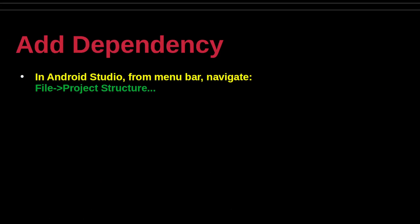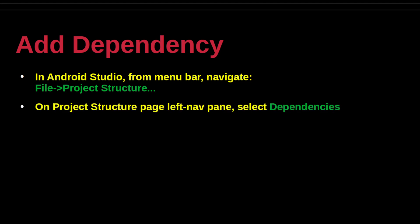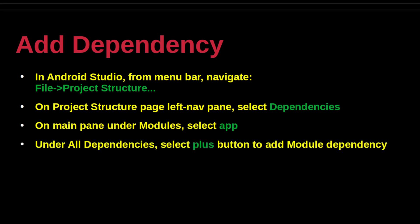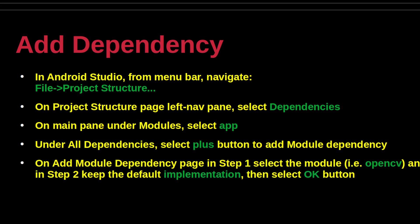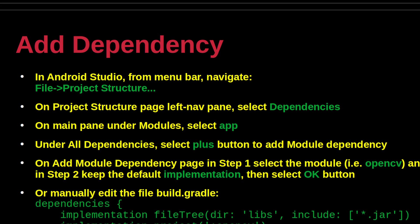From the menu bar, navigate as follows: select File, then Project Structure. On the Project Structure page, on the left nav pane, select Dependencies. On the main pane, under Modules, select App. Under All Dependencies, select the plus button to add a module dependency. On the Module Dependency page, in step 1, select the module OpenCV. In step 2, retain the default entry Implementation. Select the OK button.